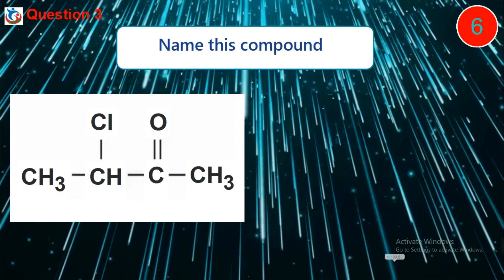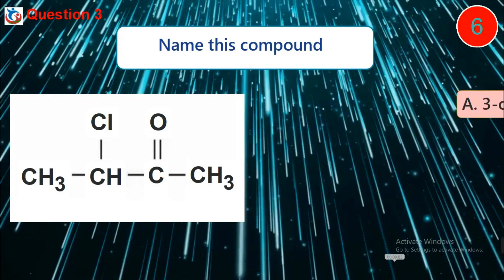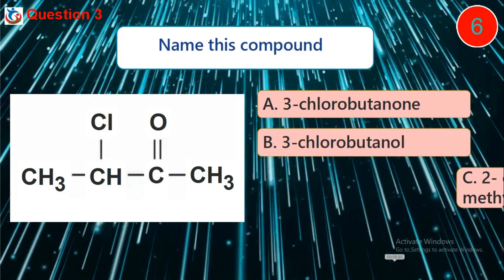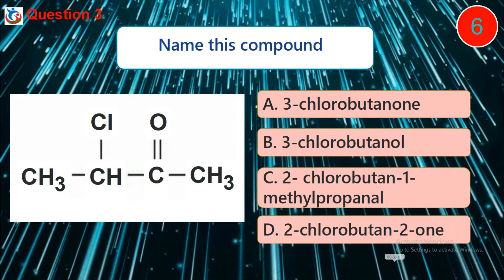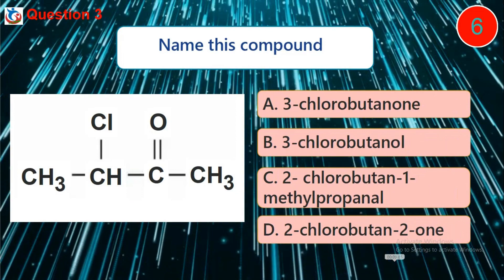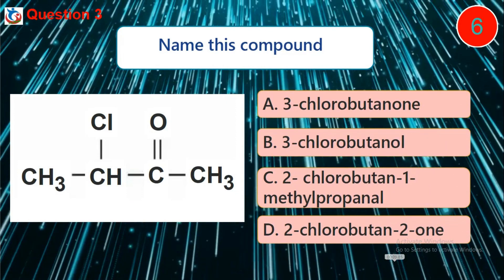Question 3. Name this compound. A. 3-chlorobutanone. B. 3-chlorobutanol. C. 2-chlorobutan-1-methyl-propanol. D. 2-chlorobutanol.